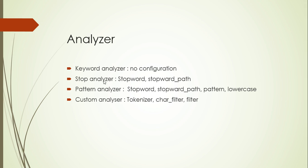The keyword analyzer does not have any configuration. The stop analyzer accepts two parameters: stopwords and stopwords path. The pattern analyzer also accepts stopwords, stopwords path, pattern, and lowercase as parameters. The custom analyzer accepts tokenizer, character filter, and filter — these are the three configuration parameters for the custom analyzer.